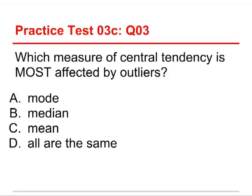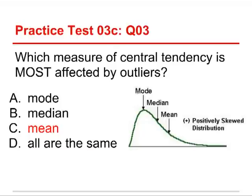Alright, number three, which measure of central tendency is most affected by outliers? The mode, the median, the mean, or all are the same? This looks awfully familiar. In any case, it's the mean. And there it is all over again, pulled in the direction of the outliers.